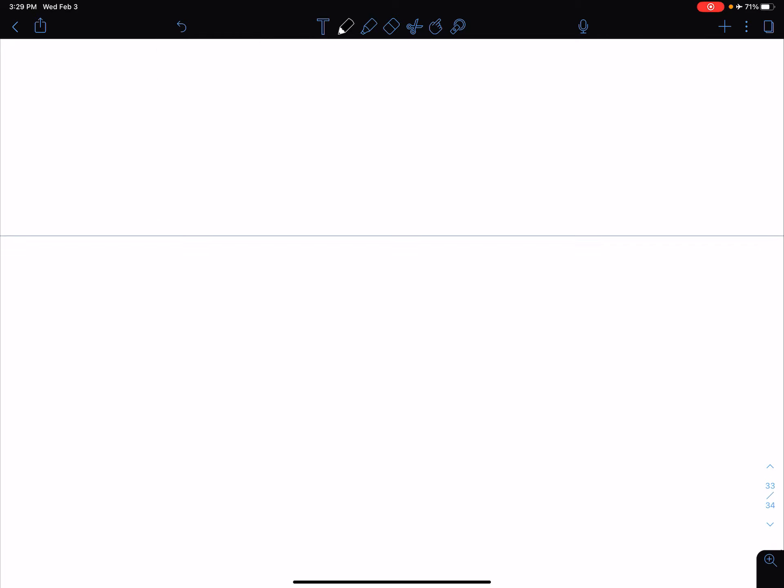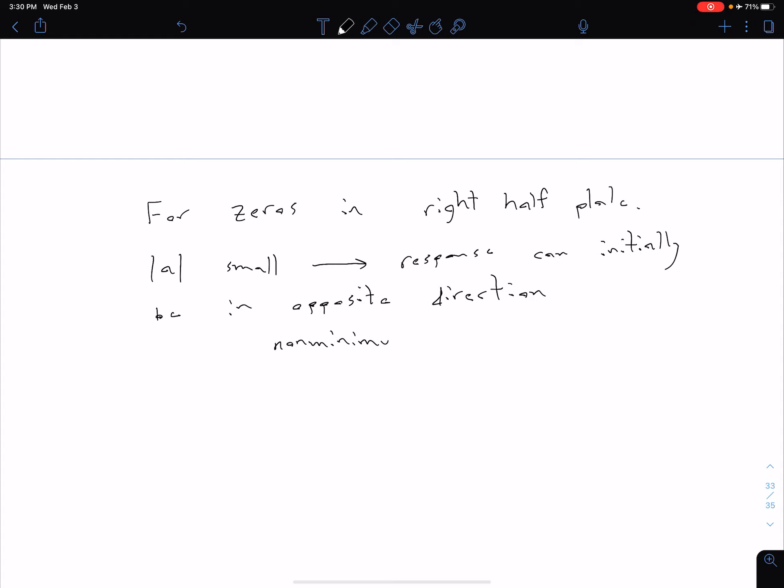A couple other things I'll mention. We can also have zeros in the right half plane. So for zeros in our right half plane, if our magnitude of A is small, then our response can initially be in the opposite direction. So response can initially be in the opposite direction from the steady state value. And so what we call this type of system is a non-minimum phase system. And we're not going to deal with that at all in this class, but it's something I just wanted you guys to be familiar with.